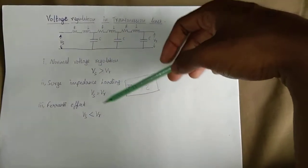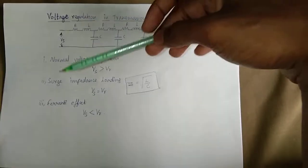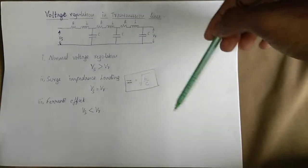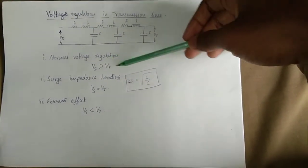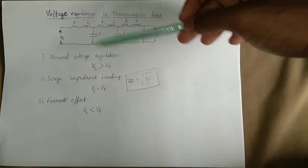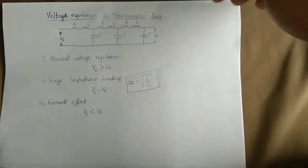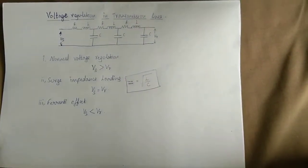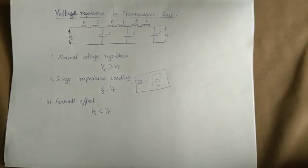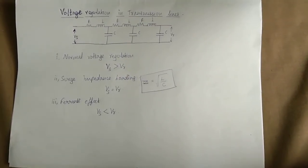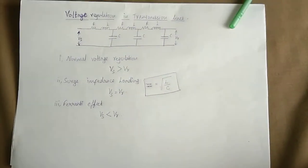So here are the three types of Voltage Regulation: Normal Voltage Regulation, Surge Impedance Loading, and Ferranti Effect. This is what I told you about household appliances. If you enjoyed this video, please like and share. If you have any doubts, comment below and please subscribe. Thank you for watching.